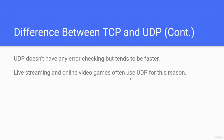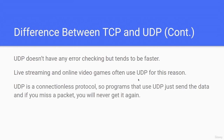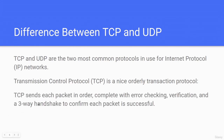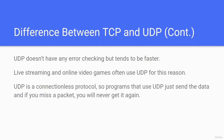Live streaming and online video games often use UDP because it is faster. UDP is a connectionless protocol — programs that use UDP just send the data, and if you miss a packet you will never get it again because there is no three-way handshake. If you're unfamiliar with TCP and UDP, just Google 'TCP versus UDP' and read a simple article. You need a basic understanding of the three-way handshake, connection verification, and the differences between TCP and UDP.